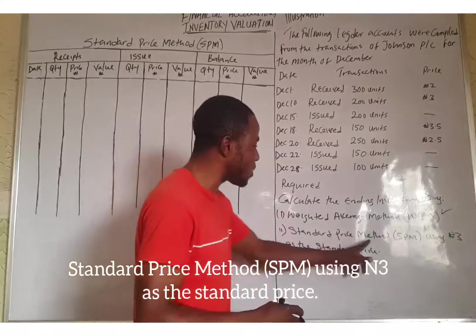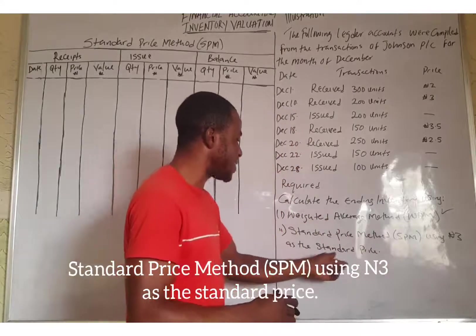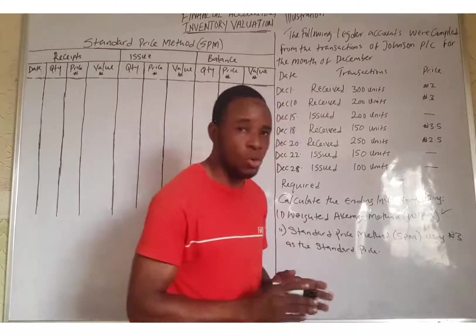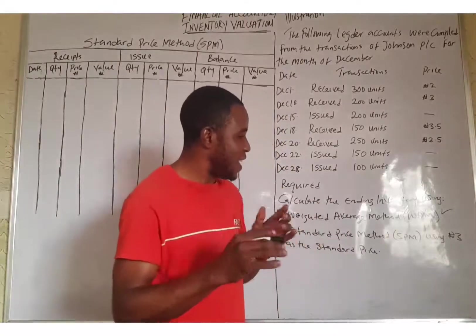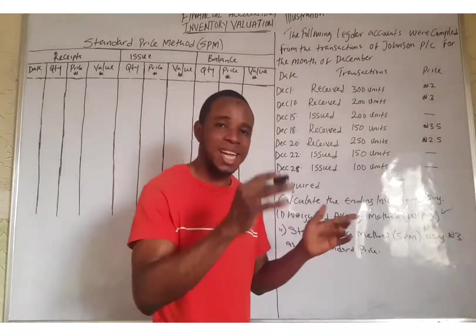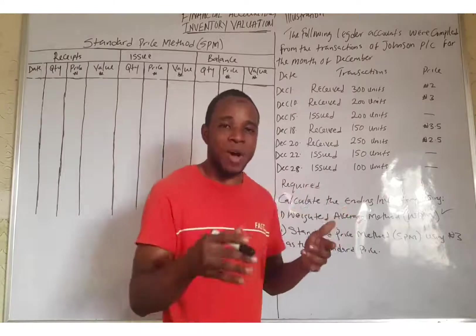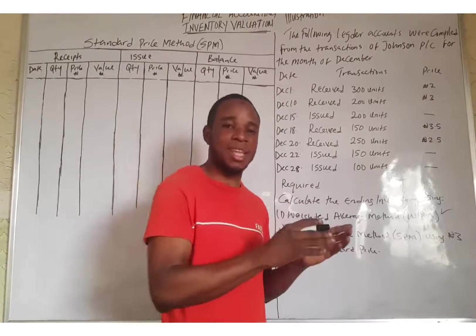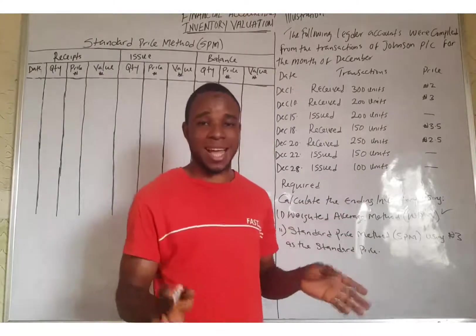They set the standard price at ₦3 (Naira) as the standard price. When you look at this method, it enhances comparison between the actual price and the standard price. And if there is a variance, it will be transferred to the variance accounts.